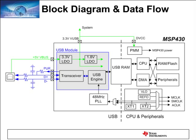The previous slides covered the MSP430's USB solution in depth — USB transfer types and endpoints, the power system, clocking, and memory and data transfer. This block diagram slide brings it all together and gives a high-level overview of the USB engine. On the left are two LDOs: a 3.3-volt LDO that converts the 5-volt V-Bus to an acceptable 3.3 volts for the MSP430, and an integrated 1.8-volt LDO.